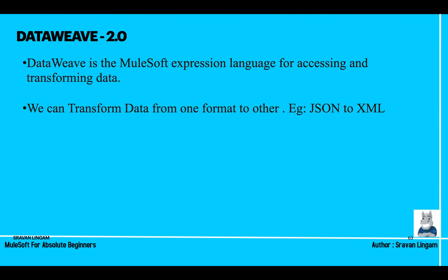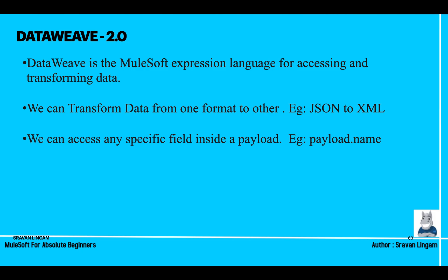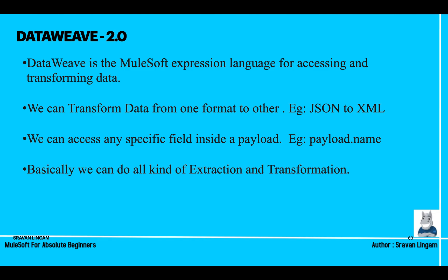For example, to transform data — if you have JSON format and want to convert it to XML, you use DataWeave. If you want to access a specific field, say a JSON payload with name, ID, and company fields, the syntax would be payload.name — where payload is the actual message. These expressions are written within hash and square brackets, which is the Mule expression language syntax.